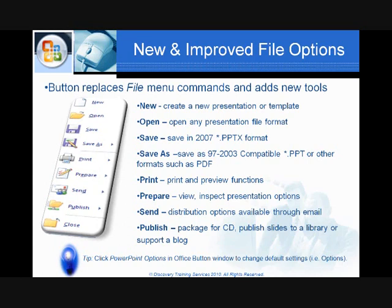You can still package your presentation as a CD, publish to document libraries, send it to a blog, or use other distribution methods. Under the Publish command, you'll also find Create Handouts in Microsoft Word — don't be afraid to try that. At the bottom of the Office button, below the most recent documents, you'll find the PowerPoint Options button. That's where your default options are located, replacing the old Tools menu where options used to exist. From there you can change popular settings, proofing, or save options.